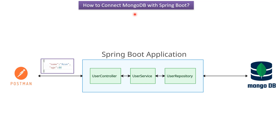In this video tutorial I will explain how to connect a Mongo Database with Spring Boot. Here you can see a Spring Boot application that has a user controller which talks to user service, and user service talks to user repository. User repository is responsible for communicating with Mongo Database. On the left side you can see Postman, which will send user details as JSON to the Spring Boot application. Spring Boot will convert the user JSON to a user object, pass it to user controller, then to user service, then to user repository, which will save the user object as a document in Mongo Database.